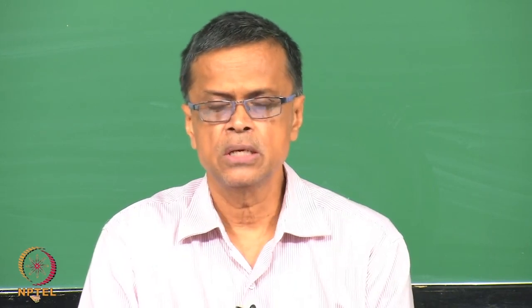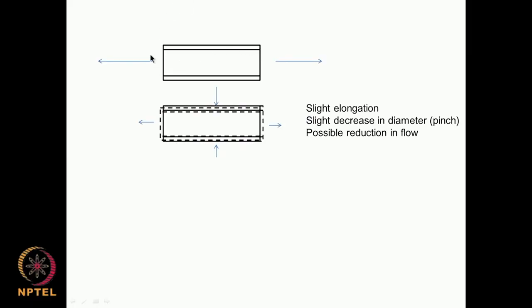If it is a rubber drain tube carrying some body fluids, the diameter gets reduced, so the rate of drainage can go down — you need to keep that in mind. The tube is there, a force is acting, it gets elongated, and there is a slight decrease in diameter because of the Poisson's ratio, which could cause a possible reduction in flow. This can become very serious in certain situations.